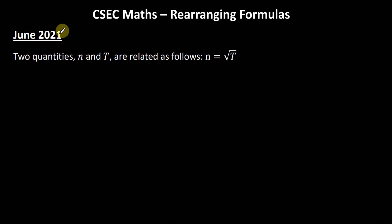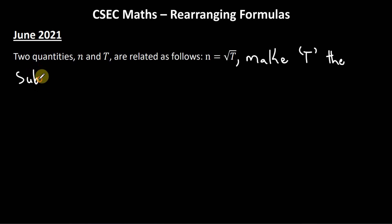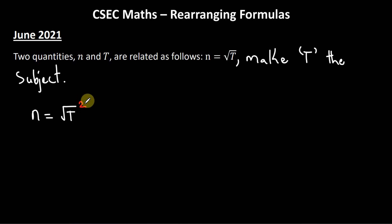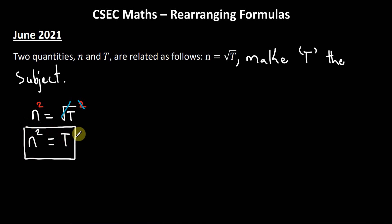Now looking at the question given on the June 2021 paper. Two quantities n and t are related as follows: n = √t. Make t the subject. To get rid of the square root symbol, we square both sides. The square root cancels the square, and we're left with t = n². This is the solution — we now have t on one side by itself.